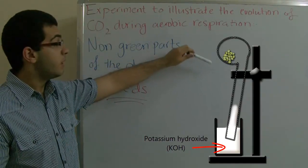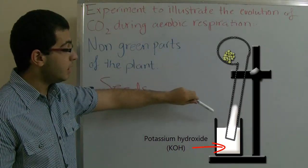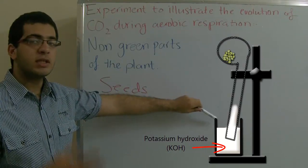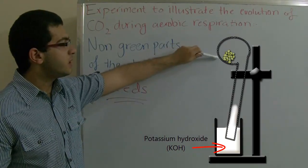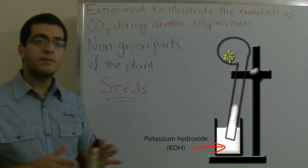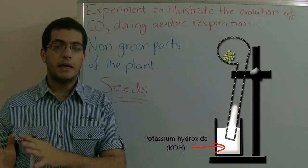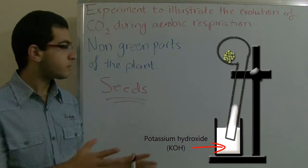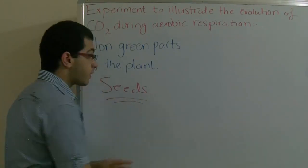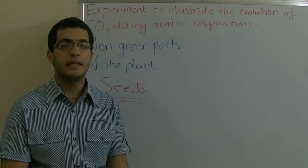The third one also has a retort with its neck dipped in a beaker. This beaker contains potassium hydroxide, just like the first one, while the seeds here are germinating seeds, just like the second one. These three retorts will be left for some time to perform respiration, and we will observe the results.